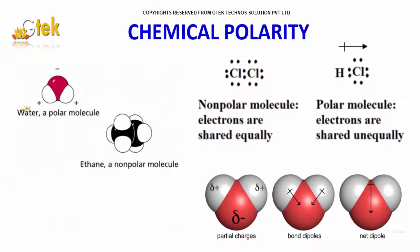Here is the water molecule, which has hydrogen and oxygen. It is a polar molecule, with plus and minus charges. Whereas ethane is a non-polar molecule — in polar molecules the electrons are shared unequally, while in ethane they are shared equally.